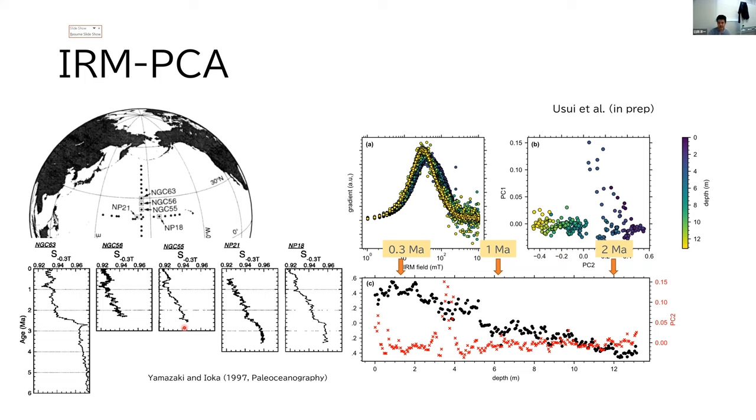Back then, they interpreted the trend by mixing between one biogenic and one terrigenous component. But present analysis suggests that the change within the terrigenous fraction may be more important to explain this pattern.